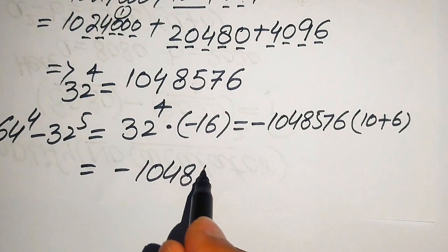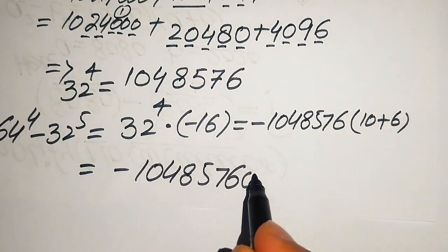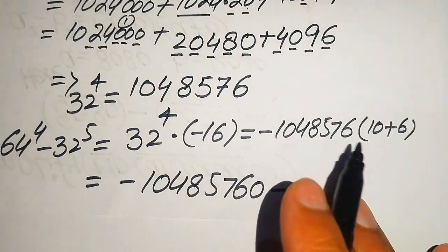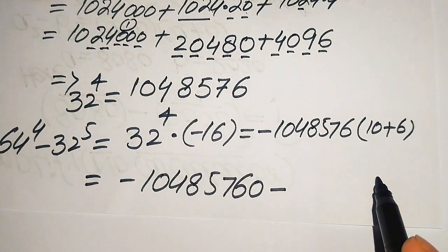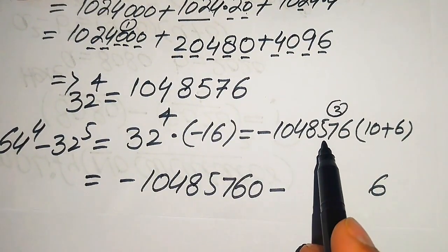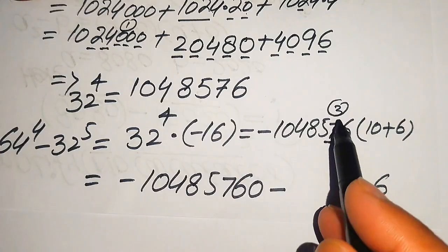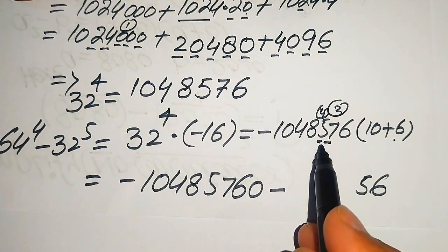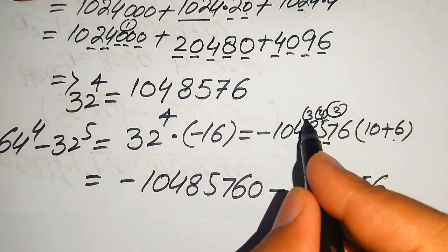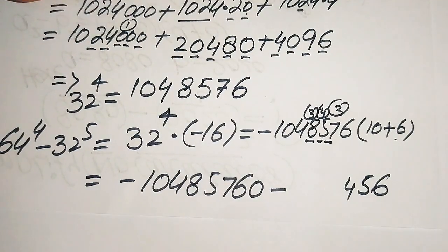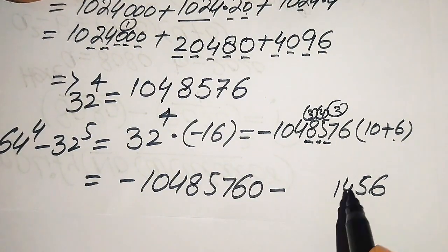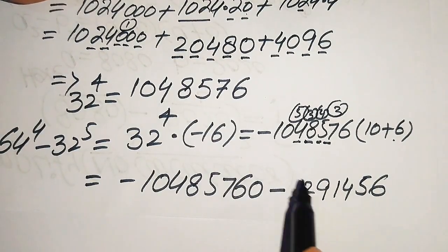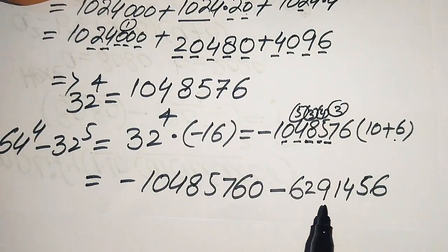Now we multiply 6 with 1,048,576: 6 sixes are 36, write 6 carry 3; 6 sevens are 42, 42 plus 3 is 45, write 5 carry 4; 6 fives are 30, 30 plus 4 is 34, write 4 carry 3; 6 eights are 48, 48 plus 3 is 51, write 1 carry 5; 6 fours are 24, 24 plus 5 is 29, write 29; and 6 ones are 6.